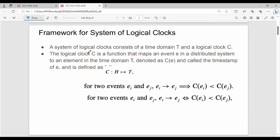The system of logical clocks consists of a time domain T and a logical clock C. In my system, there are processes with events, for example e1, e2, e3, e4. Logical clock C is a mathematical function that assigns a timestamp for each and every event.